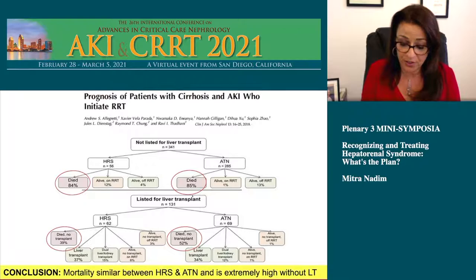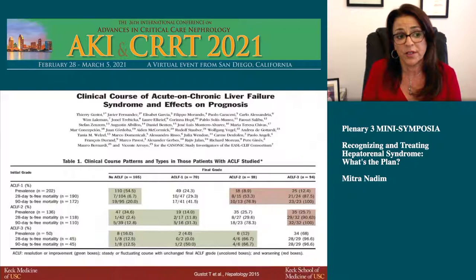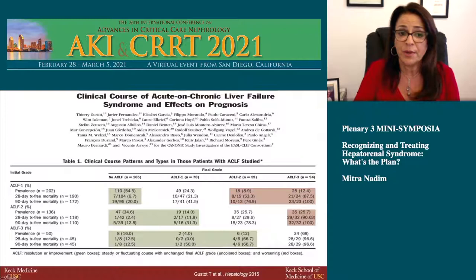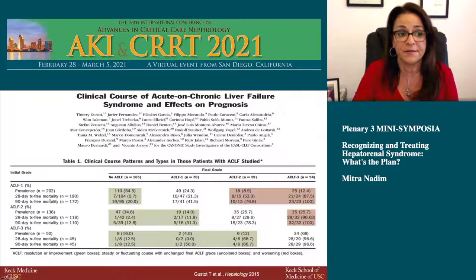Studies are showing that patients presenting with ACLF — regardless of grade 1, 2, or 3 — can be very sick on admission, but by day three or seven, if their ACLF grade improves down to grade 1, their 30-day mortality can be 0%. In contrast, a patient presenting with ACLF 1 who deteriorates to ACLF 3 by one week — multi-organ failure — has very poor survival.